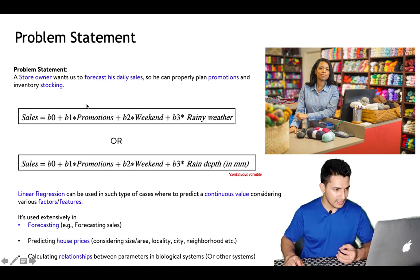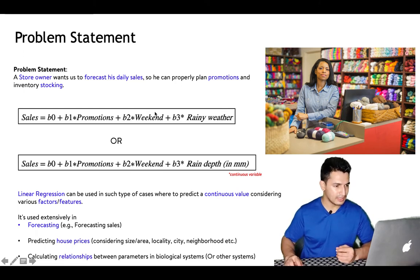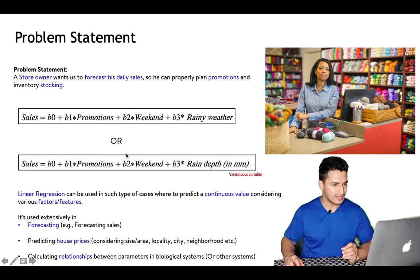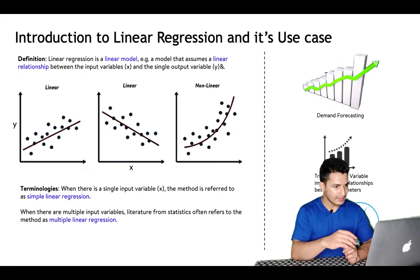Linear regression is also used to calculate relationships between parameters in biological and econometric systems. The coefficients b0, b1, b2 represent the dependency of sales on the variables — one unit increase in weekend will change sales by b2 units. b2 can be positive or negative, capturing how much the dependent variable changes as each feature changes.